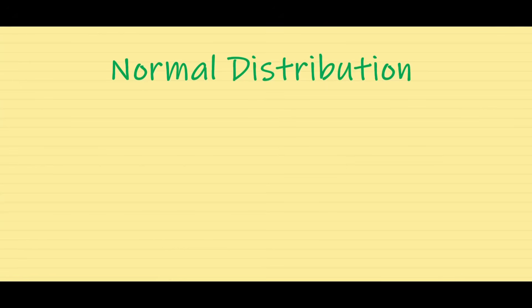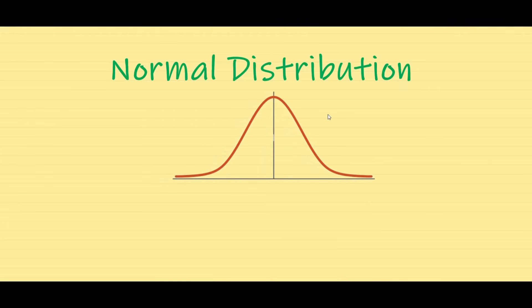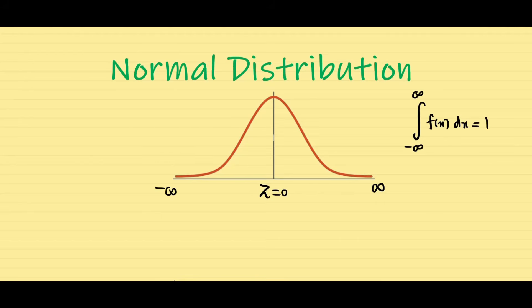Dear friends, this lecture is concerned about some basic ideas which will help to solve problems in normal distribution. We know that the normal curve is bell-shaped and it is unimodal, with a maximum value at z equal to 0, and it moves from minus infinity to infinity. Since it is a continuous distribution, the total area is going to be 1.